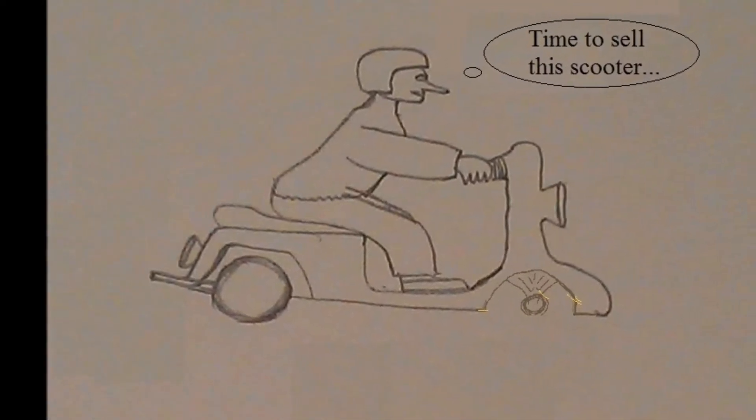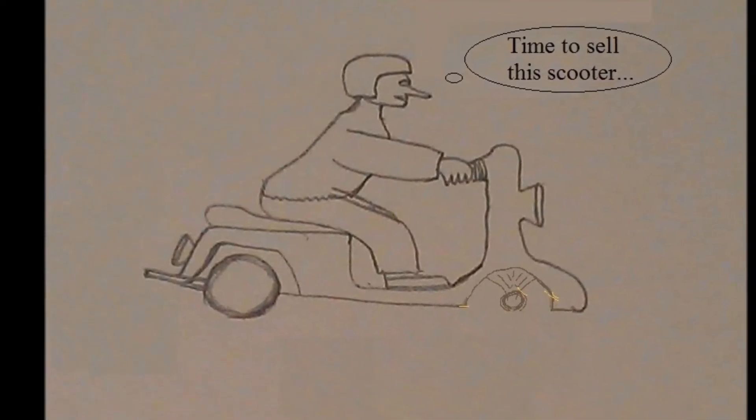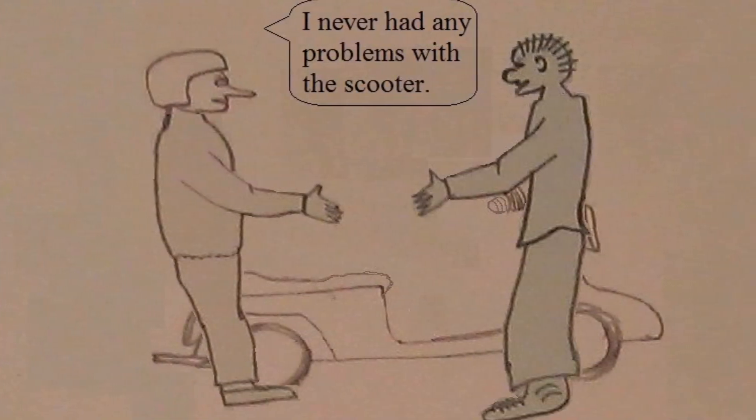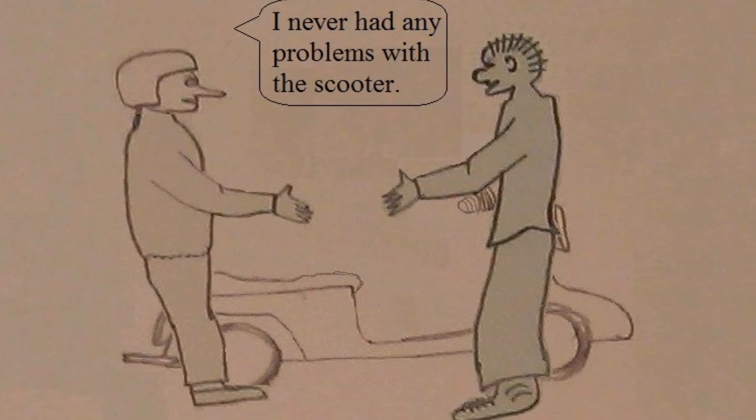Now Bob wants to find a buyer for his broken scooter. Bob didn't tell Alan the potato nose that the scooter has a problem.